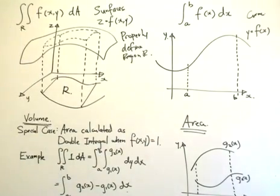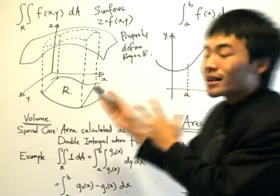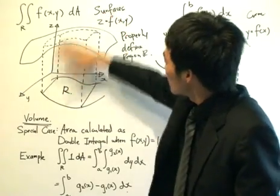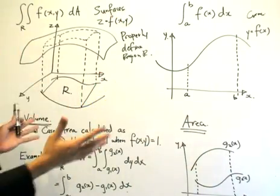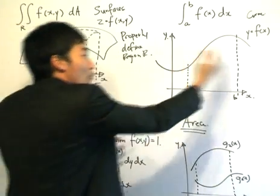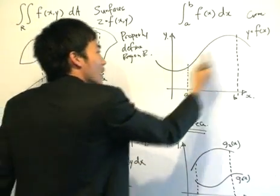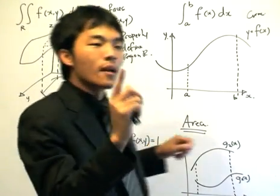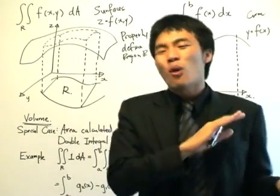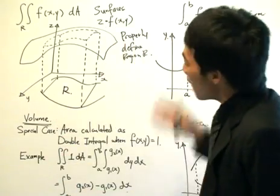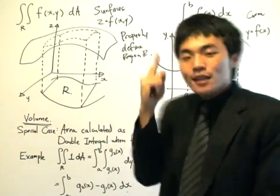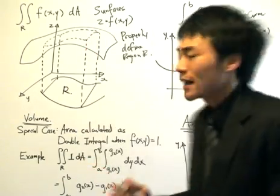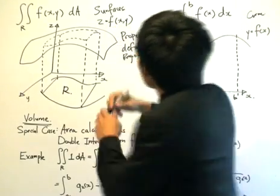The double integral gives us the volume — the volume bounded by region R and the surface. The single integral gives us the area, because we take an elementary length multiplied by the height to get area; we take an elementary area multiplied by the height to get volume. There is a special case that textbooks and schools test often: the double integral can also give us the area, and that happens when f(x, y) equals 1.